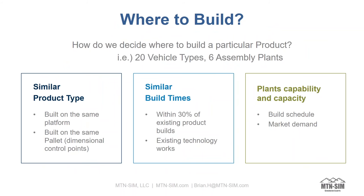One of the early decisions: if we have a company with six assembly plants interested in building 20 vehicle types, where do we put which vehicle? Some rules of thumb: place it in a facility with a similar product type — the closer the better, built on the same platform. Something that can leverage existing dimensional control points that add cost to the facility. Build times should be within 30% of the existing product builds — you don't want something that takes twice as long to build as the next vehicle type.